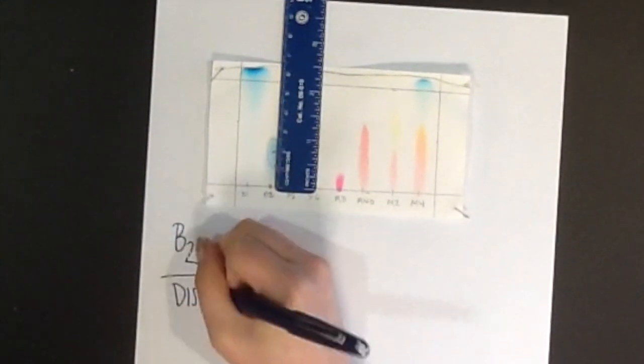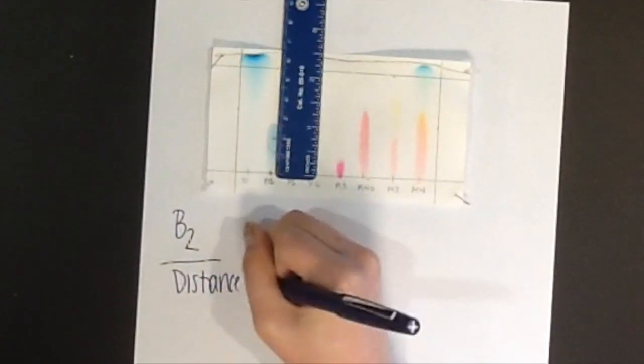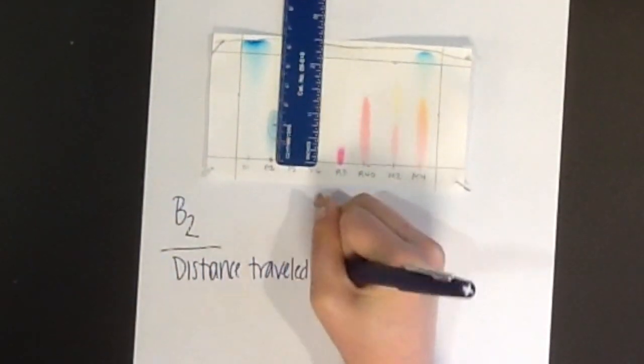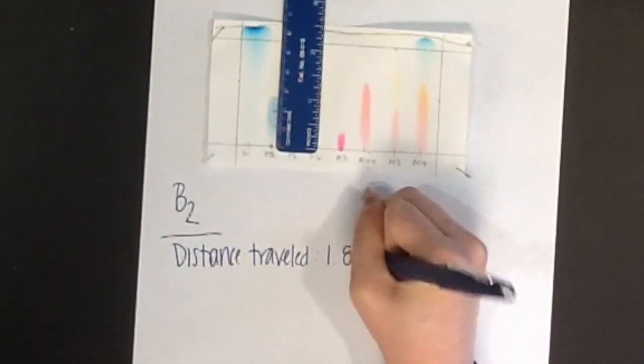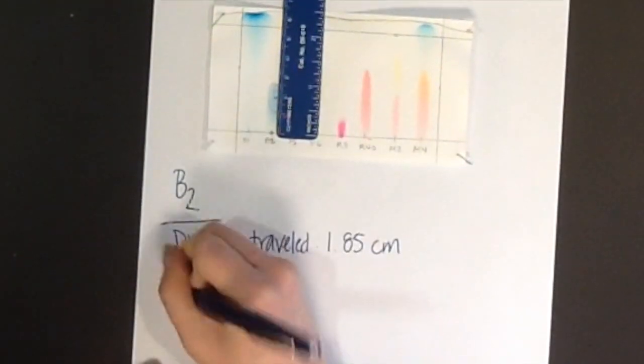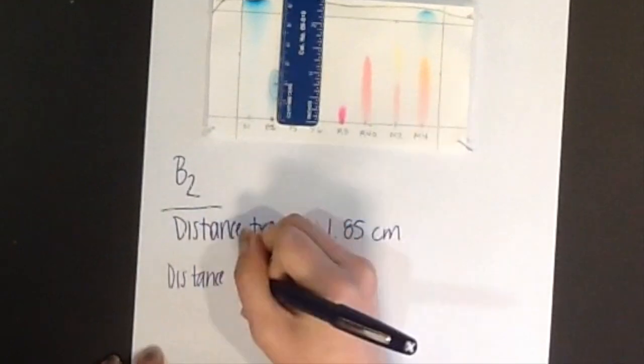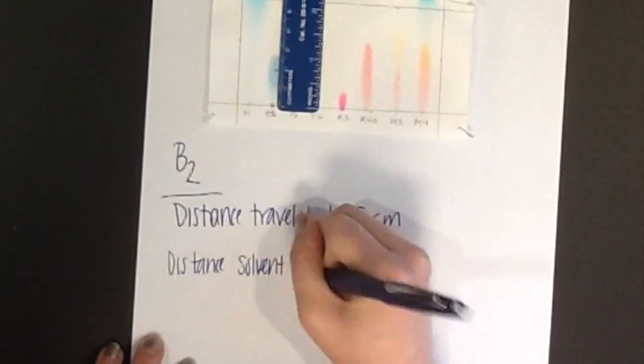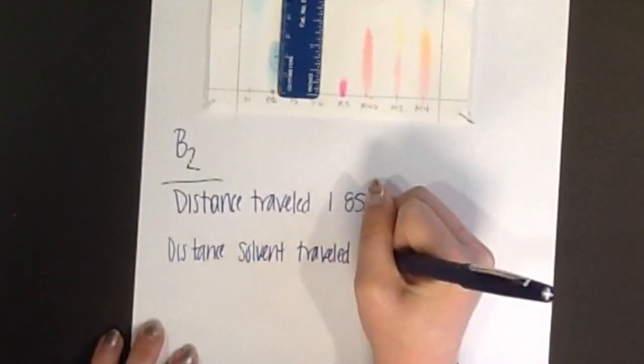Next, measure from the origin to the solvent front. This is the distance traveled by the solvent. The value for this is 6.29 cm. You will divide these two and your answer will be 0.294.